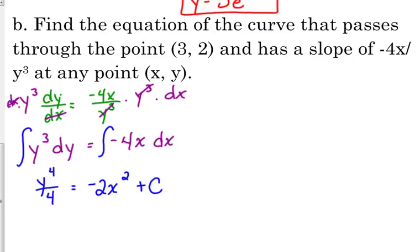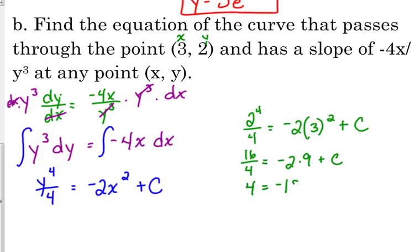Plug in our particular information. x is 3, y is 2, so 2 to the 4th over 4 equals negative 2 times 3 squared plus c. 2 to the 4th is 16, 3 squared is 9, so 16 over 4 is 4, equals negative 18. 22 is our c.